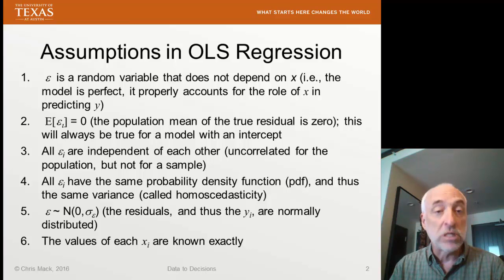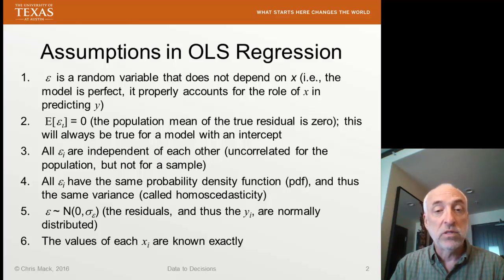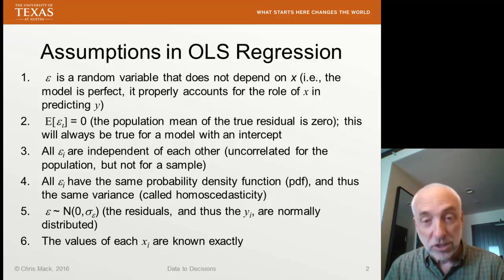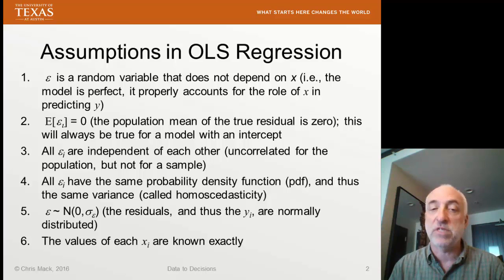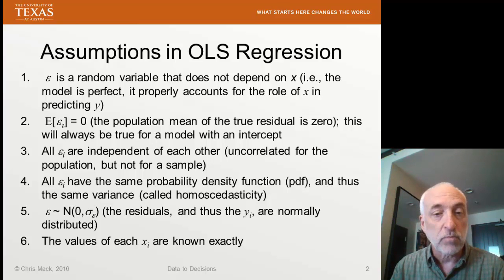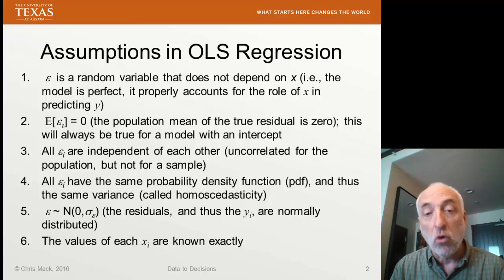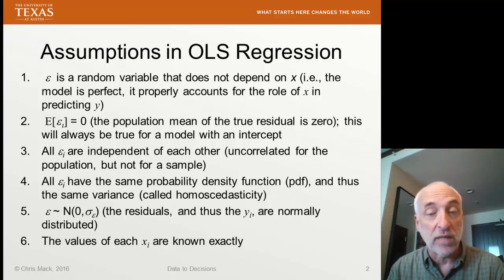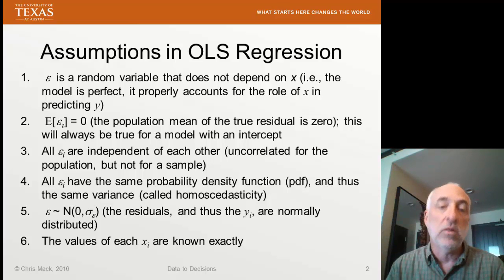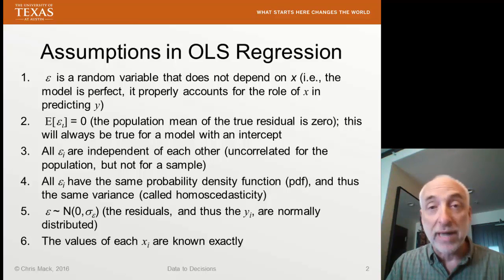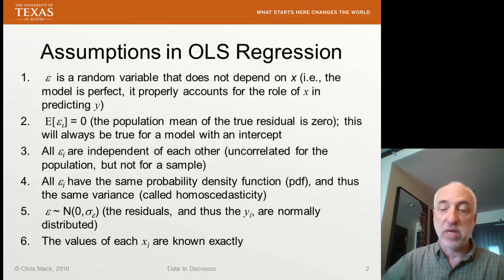Number five: we assume that all the residuals are normally distributed — they have the same variance, and that variance follows a normal distribution. And finally, number six: we assume in our regression that all of the input variables — the X_i predictor or regressor variables — are known exactly in our data set. In other words, all uncertainty in the measurement is uncertainty in the measured value of Y sub i, with no uncertainty in the X sub i at all.